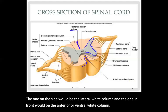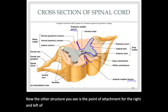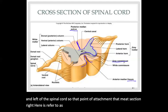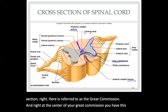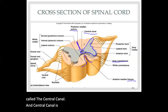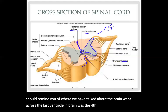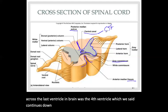The other structure you see is the point of attachment for the right and left of the spinal cord — that midsection is referred to as the gray commissure. Right at the center of your gray commissure, you have an opening called the central canal, where your cerebrospinal fluid flows. This should remind you of the brain ventricles — the fourth ventricle continues down the spinal cord passing through the central canal.